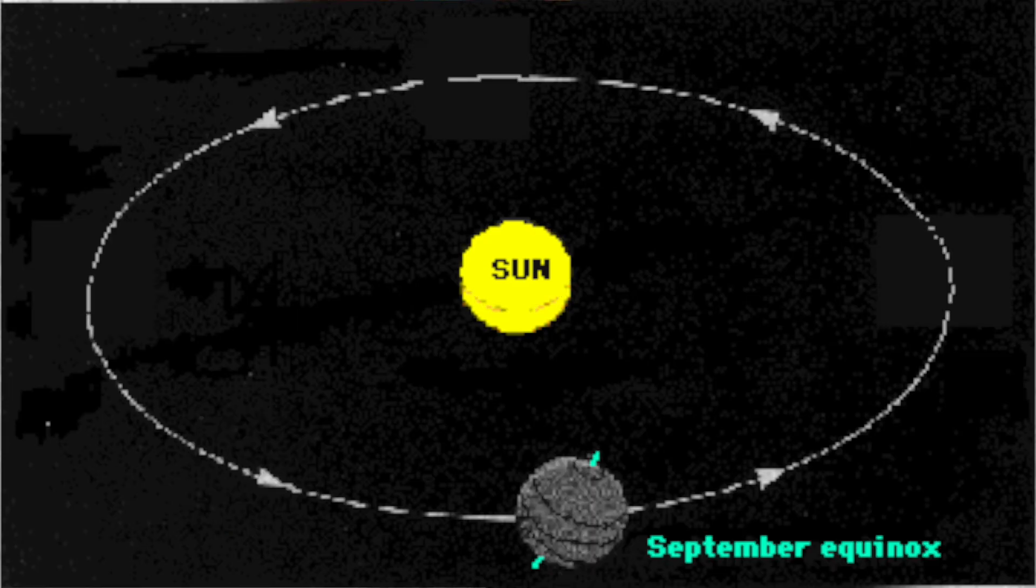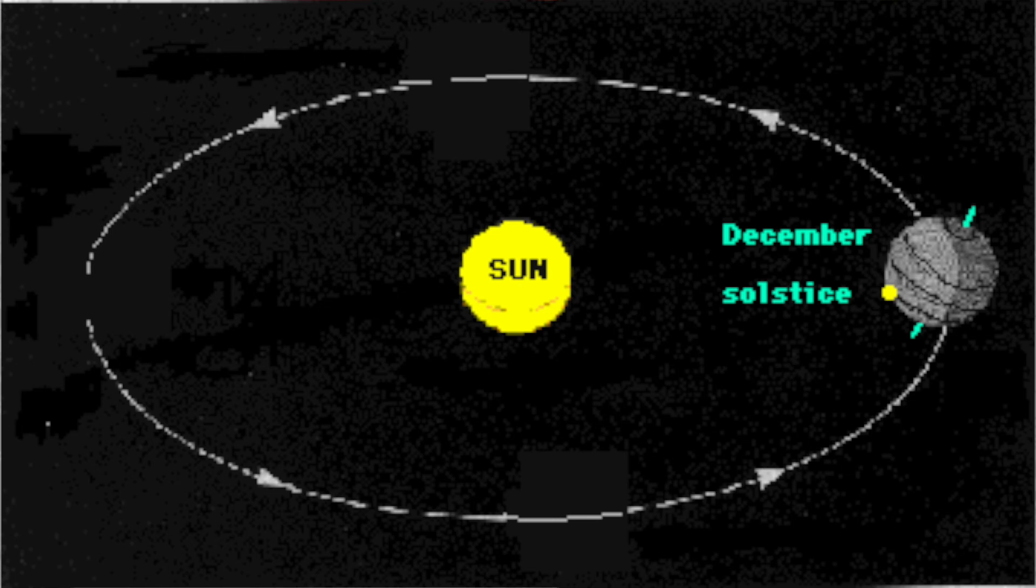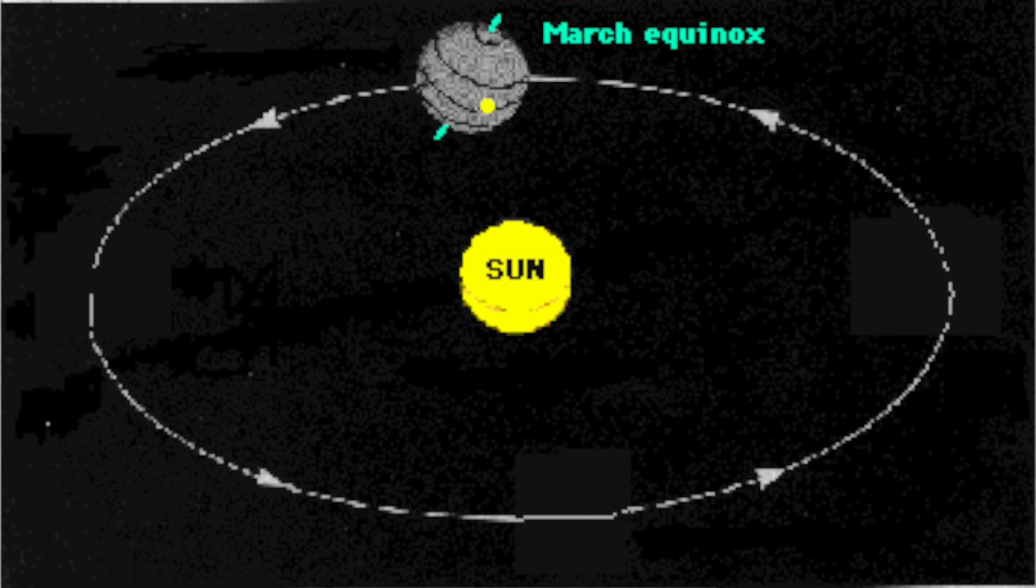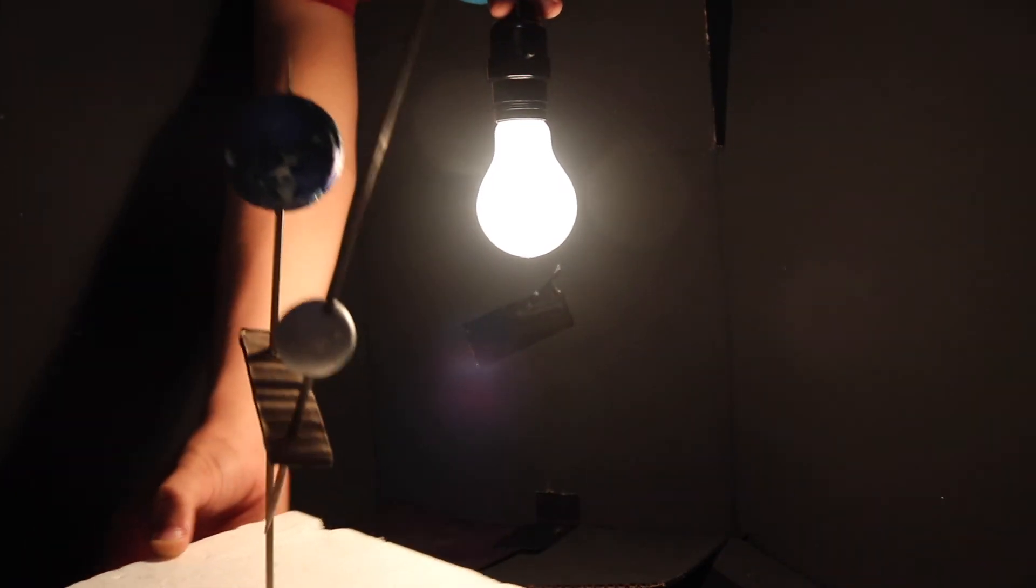Winter for the north and summer for the south are followed three months later by spring in the north and fall in the south, as the tilt is relatively even and they both get the same amount of light. Three months later, the Earth is on the opposite side of the Sun, and the seasons switch for the two hemispheres from the beginning of the orbit. The orbit continues, and after another three months, the north is in fall and the south is in spring. The cycle continues yearly.